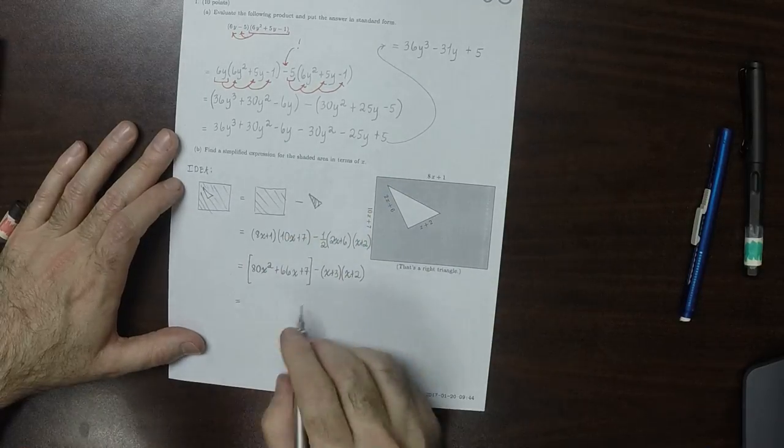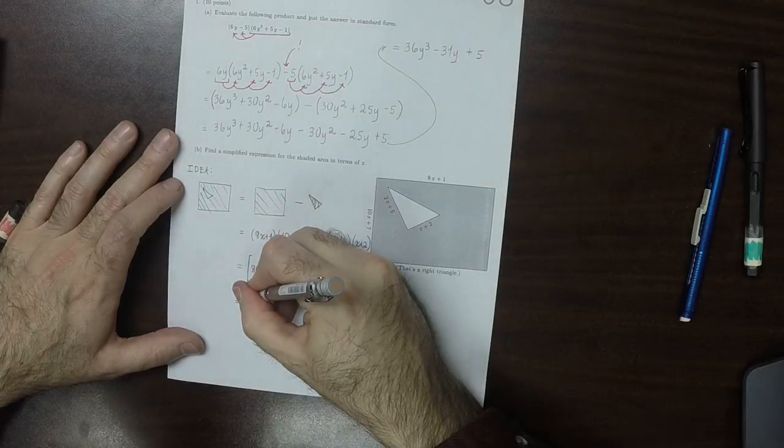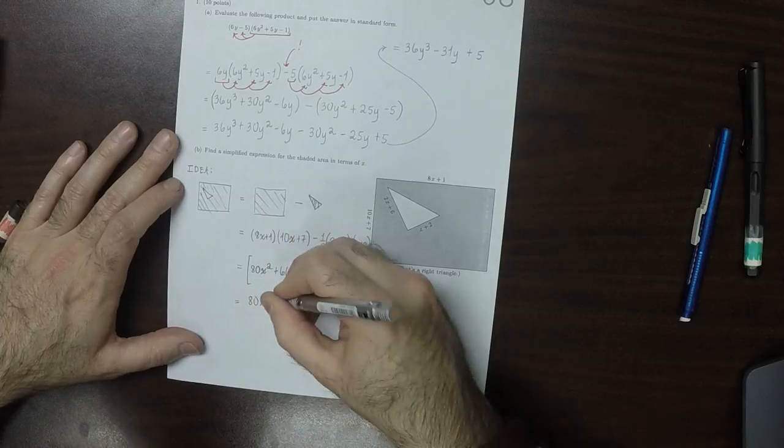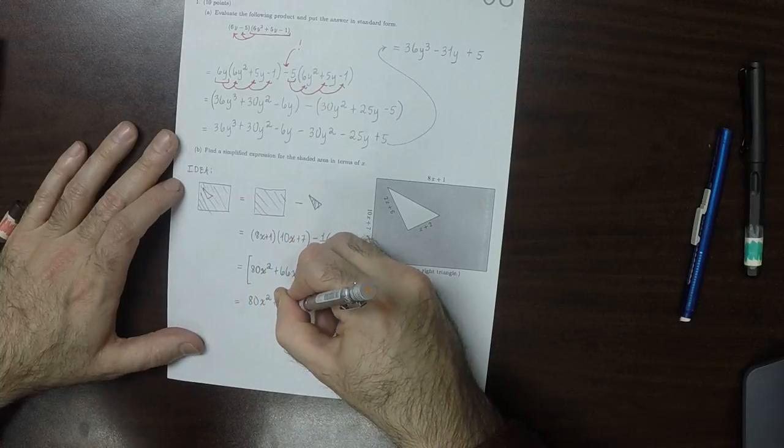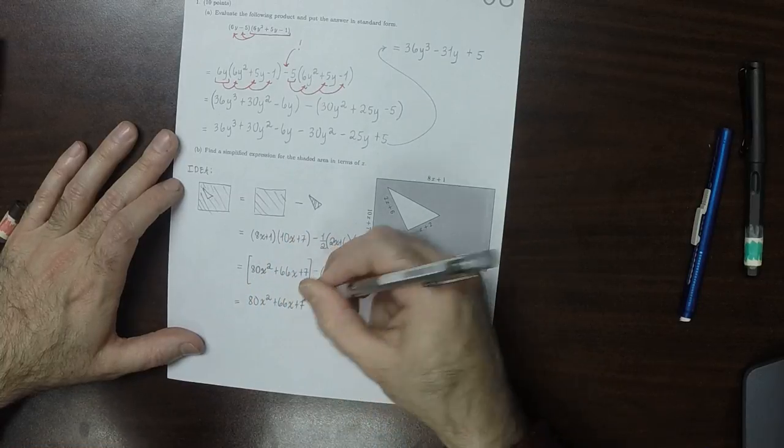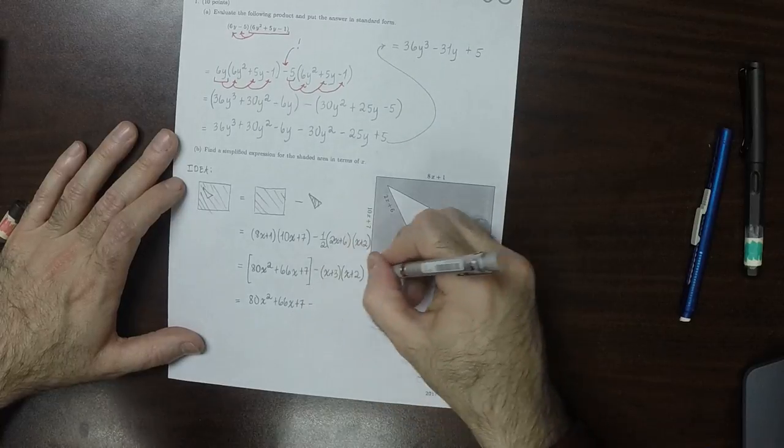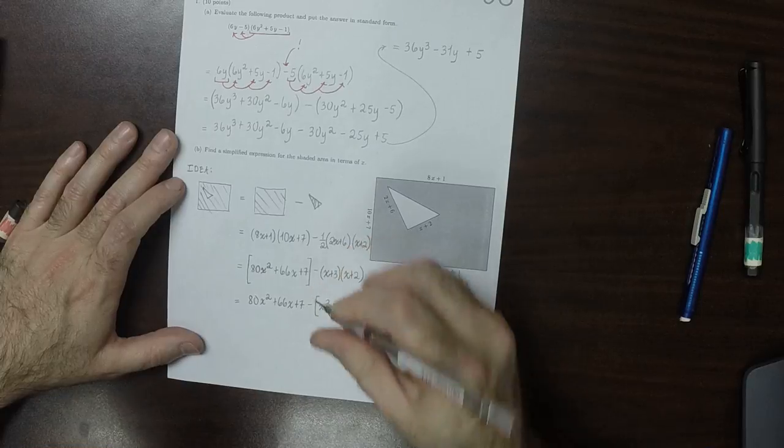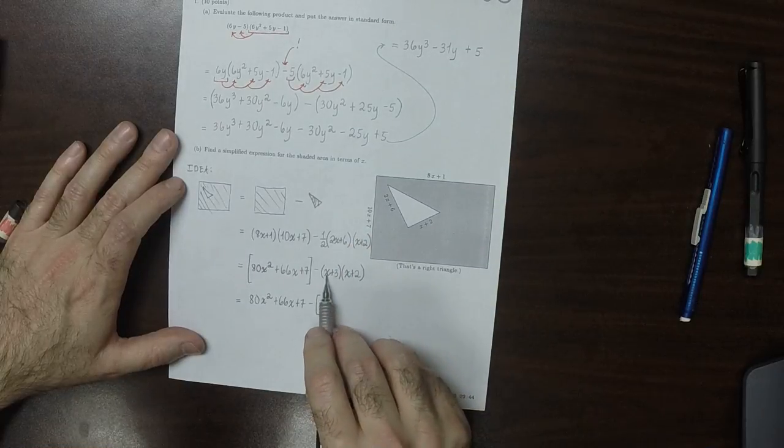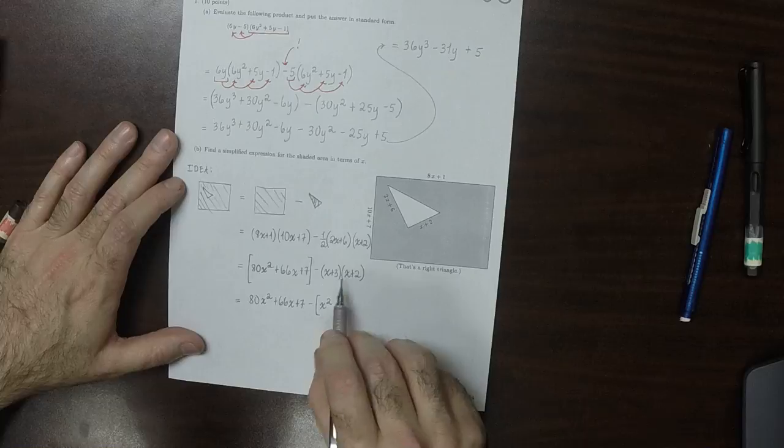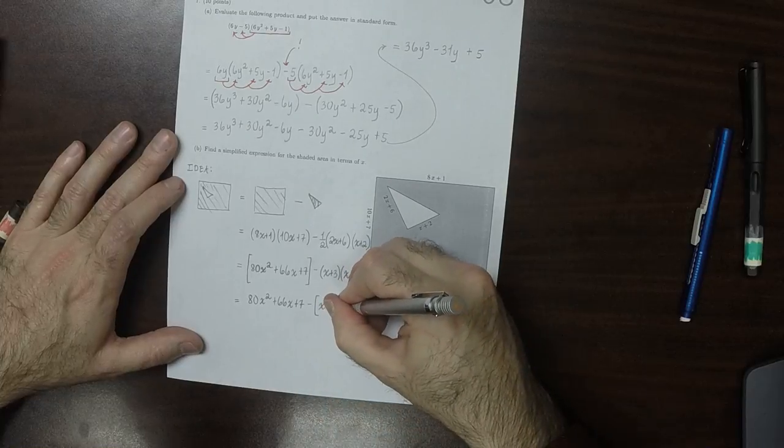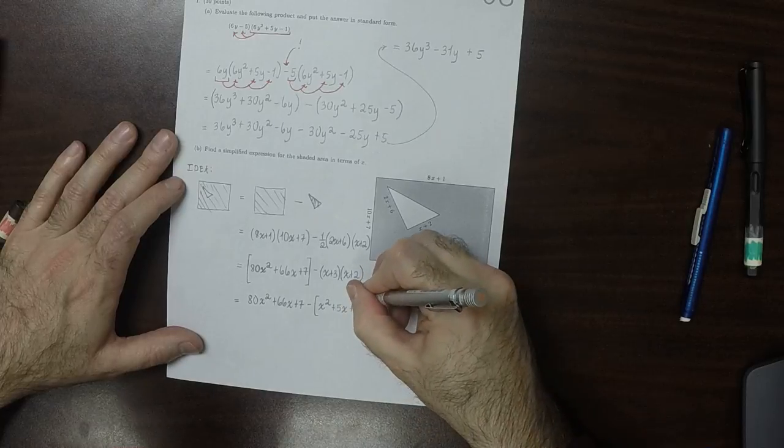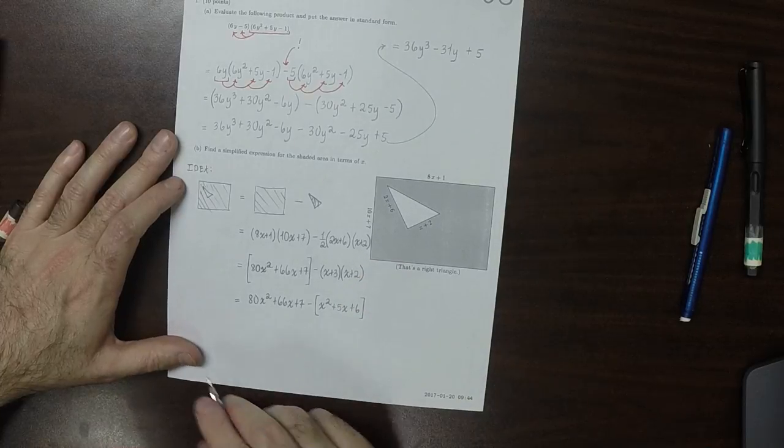Okay, so that would be, I can drop the square parentheses now. And that would be 80x squared plus 66x plus 7, and then minus, I'll parenthesize this, minus x squared. And then the O and the I term, that would be 2x plus 3x is 5x. And then the L term is 6.